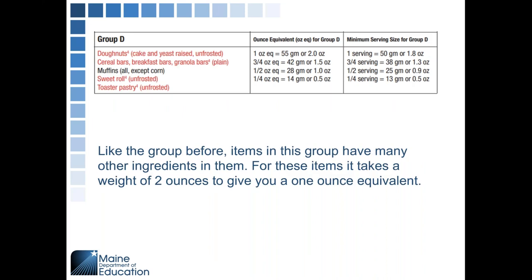Next is Group D. Like Group C, items in this group have a lot of other ingredients mixed into them. Therefore it has been determined that items in this group need to weigh two ounces to become a one ounce equivalent. This includes donuts, cereal bars, muffins, any sweet rolls without frosting, or toaster pastries without frosting.